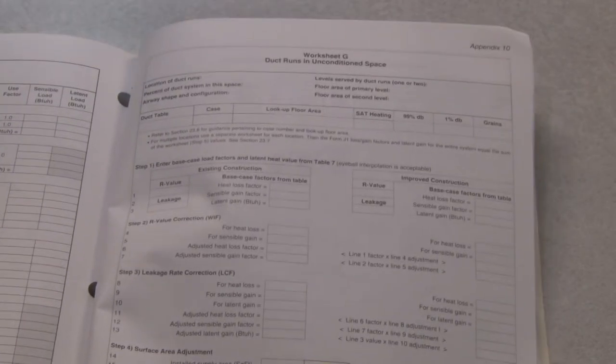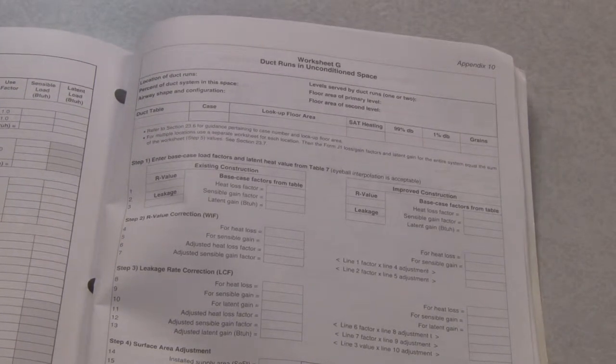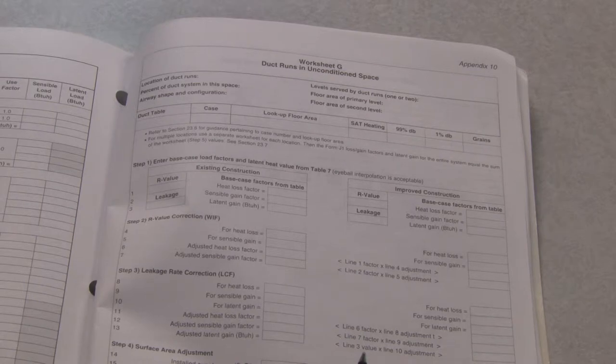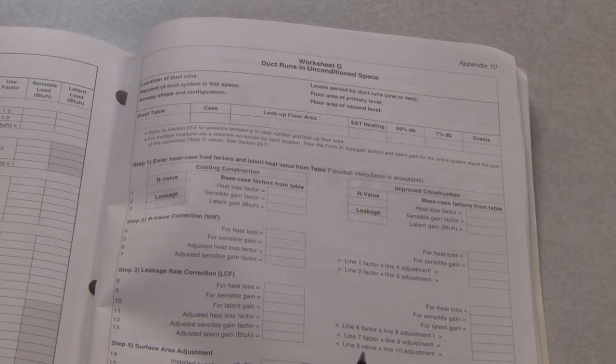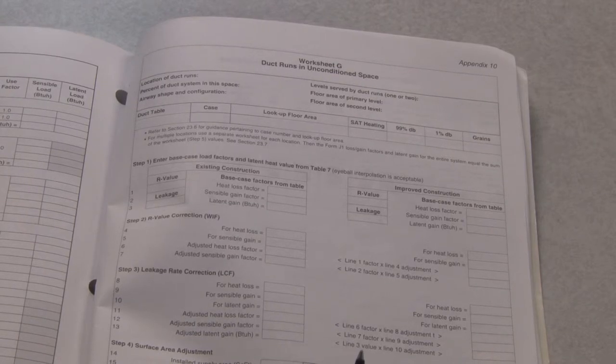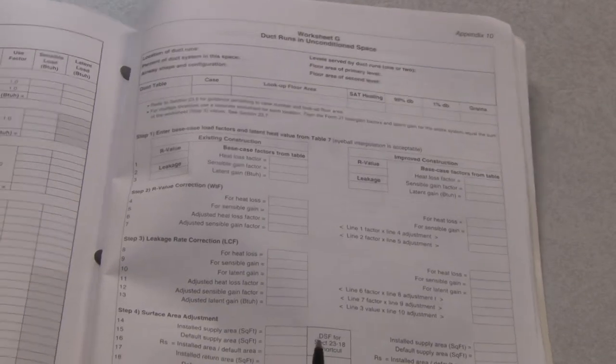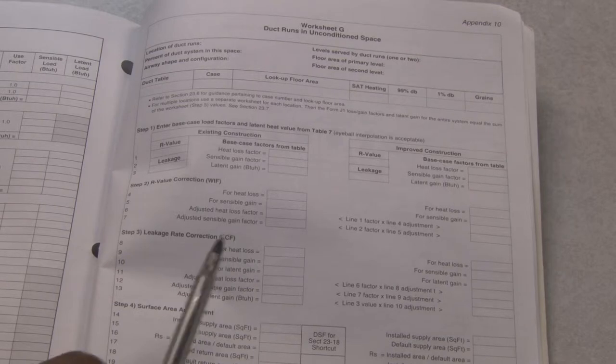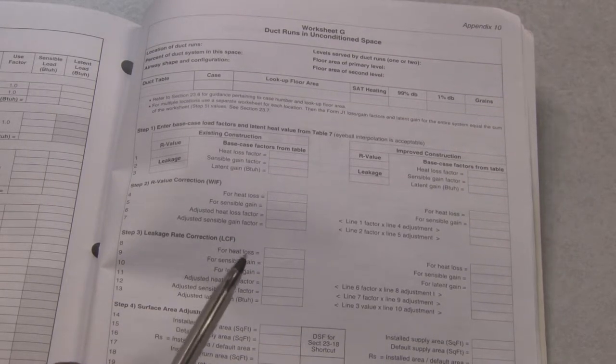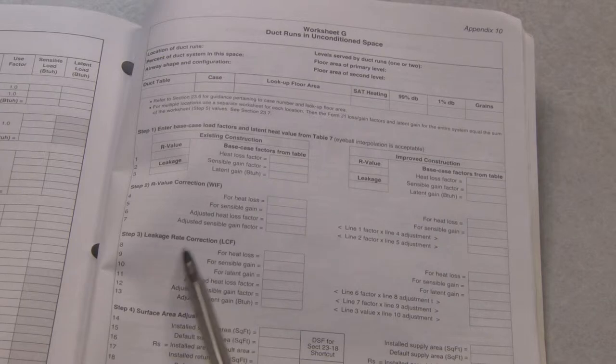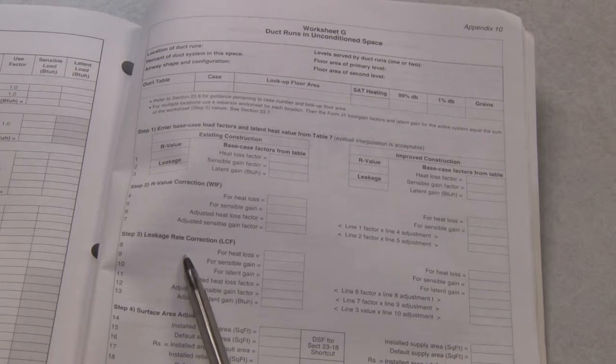Worksheet G goes into duct runs in unconditioned space. That means that if you have duct work in the attic, you'll be able to pick up heat in the summertime and lose heat in the wintertime. So those are losses and gains that we need to keep in mind. Or if the duct work is in the crawl space, the same thing can happen. The crawl space is not heated. This is non-conditioned space. And because of that, we need to consider those loads also when we figure out the heat loss and gain for a house. So we use this information to basically look at leakages through the duct work and also heat transfer through the duct work.